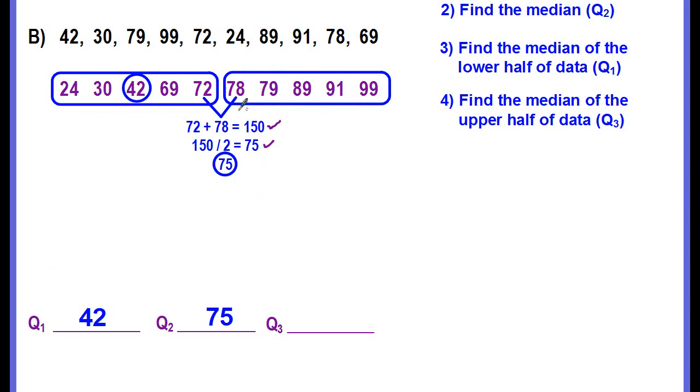Now, we already have our upper half of our data here. We want to find the median of that. And it's going to be 89. So this is our quartile 3, 89.